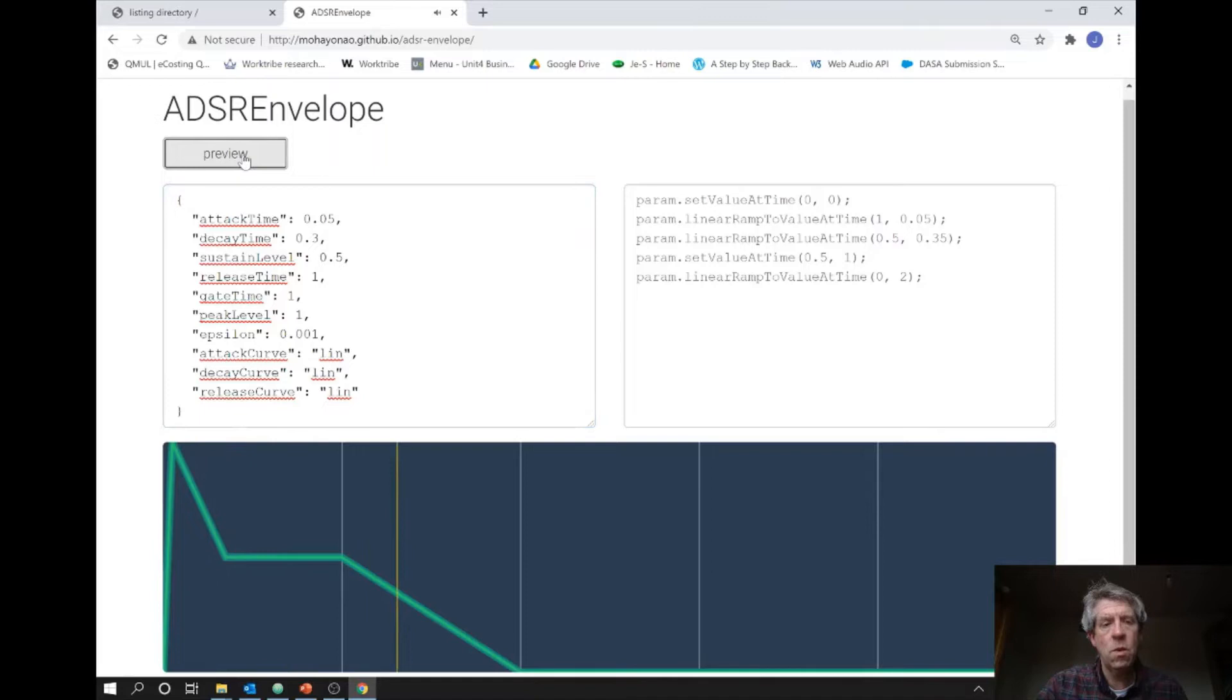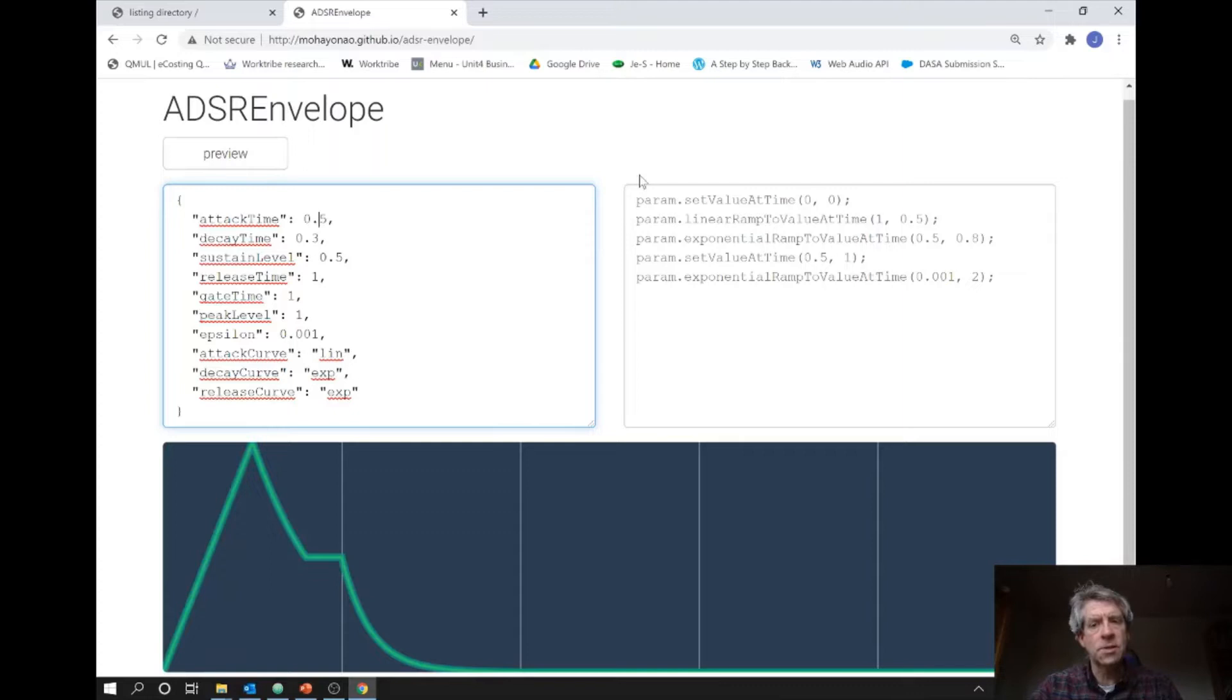So I can change a few parameters here. Let's make the release curve at the end exponential, and let's make the decay value exponential, and let's make the attack time be much, much longer. And you can see how the values over here change—we have an exponential ramp for the attack and here for the release.